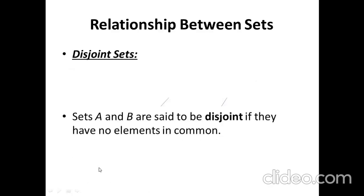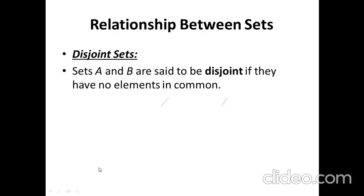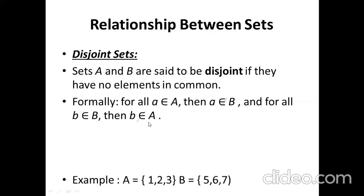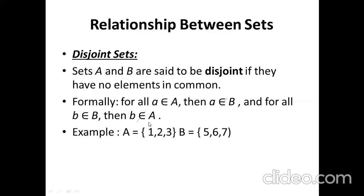The next relationship is disjoint sets. Sets A and B are said to be disjoint if they have no elements in common. Formally, for all elements: if an element belongs to A, then for disjoint sets it will not belong to B, and if an element belongs to B, it will not belong to A. For example, if A = {1, 2, 3} and B = {5, 6, 7}, we can see there is no element common between the two sets.